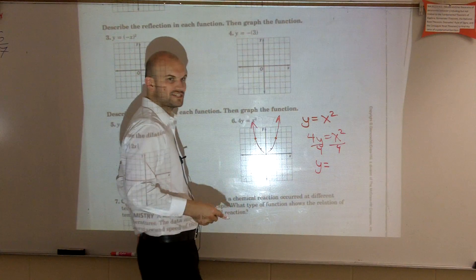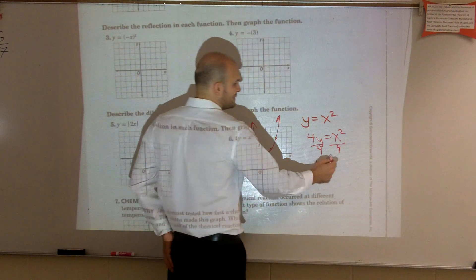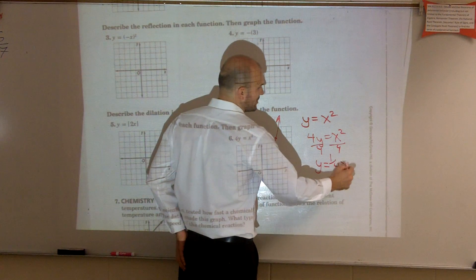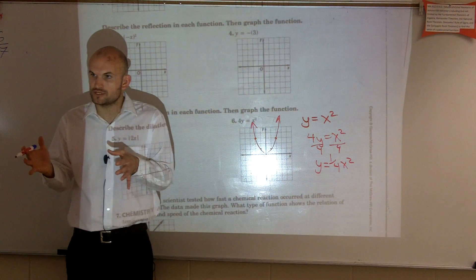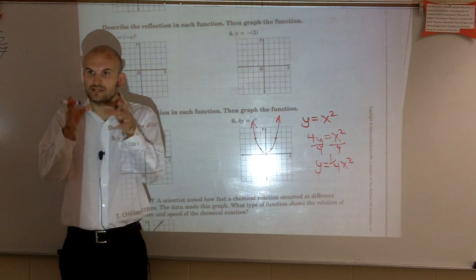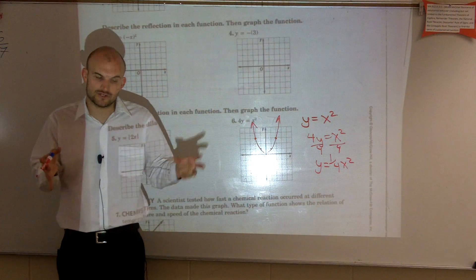Y equals, we could write x squared divided by 4, but we need to understand that dilation is the number that's multiplied by your function. Dilation is when we have a number being multiplied by our function.